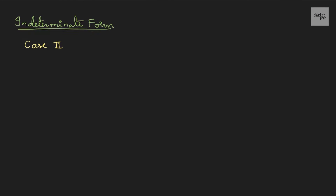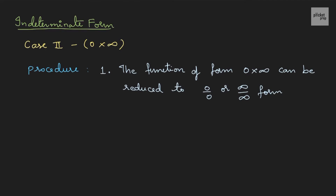Indeterminate forms. In this, the second category is 0 into infinity. So whenever we see a function of this format, we need to follow certain steps. The procedure is: the function of the form 0 times infinity can be reduced to 0/0 or infinity/infinity form. After that, the second step is to apply L'Hospital's rule. Let us take one question to understand this.